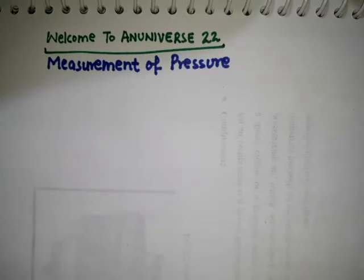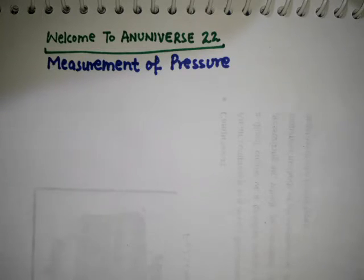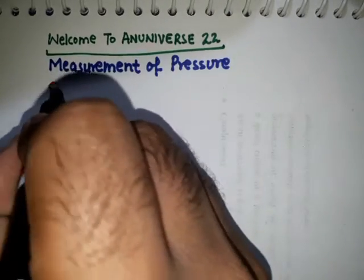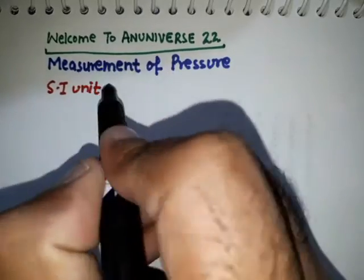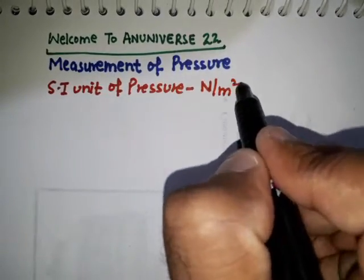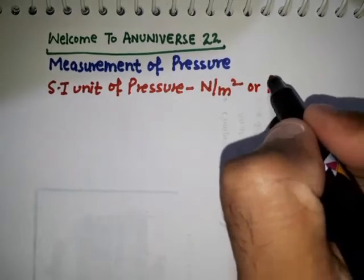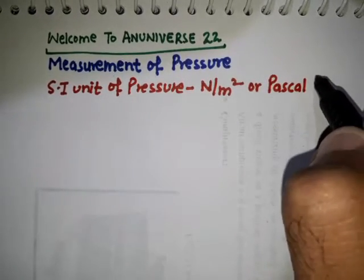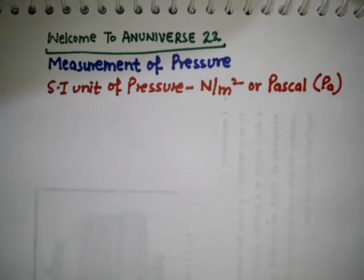Hello friends, welcome to N-Universe Double 2. In this video we will discuss about measurement of pressure. Before discussing about measurement of pressure, firstly we have to know about the fundamental SI unit of pressure, that is Newton per meter square, also known as Pascal, and that is generally denoted by Pa. Low pressure is basically expressed in terms of mm of water or mm of mercury.